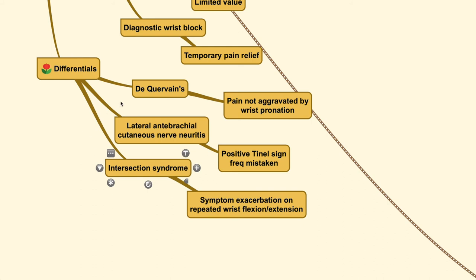For the differentials, the symptoms are quite alike those with de Quervain's disease. But in de Quervain's, the pain is not aggravated by wrist pronation, while in Wartenberg syndrome, the symptom is especially aggravated by wrist pronation. Another differential could be neuritis of the lateral antebrachial cutaneous nerve, where positive Tinel's signs can be frequently mistaken. The intersection syndrome usually has symptom exacerbation on repeated wrist flexion and extension, which is not found here.